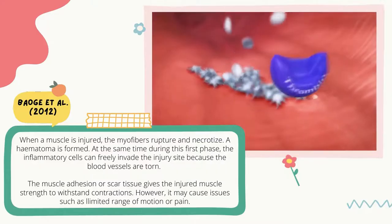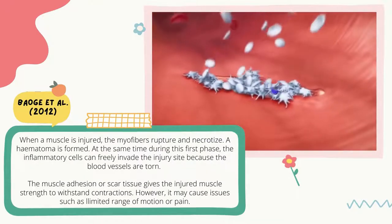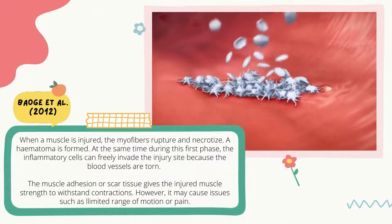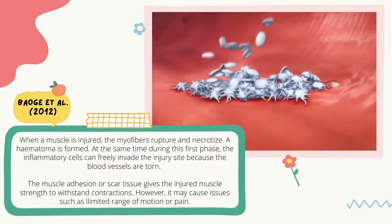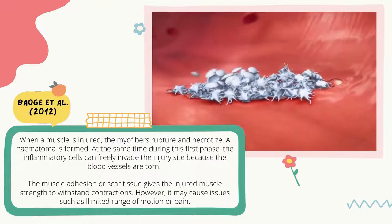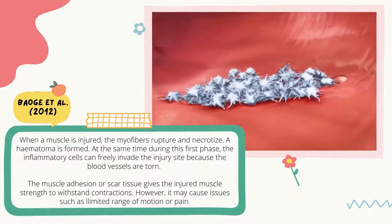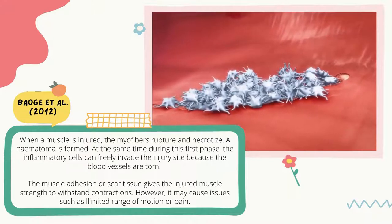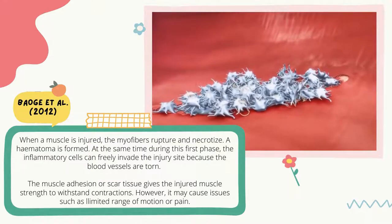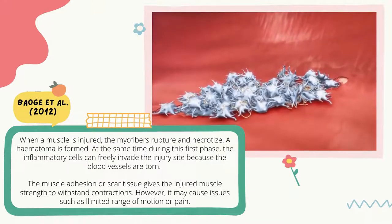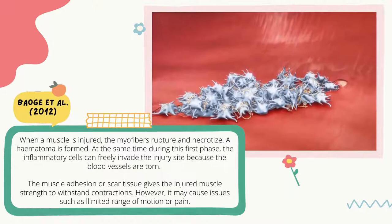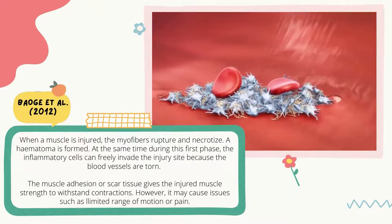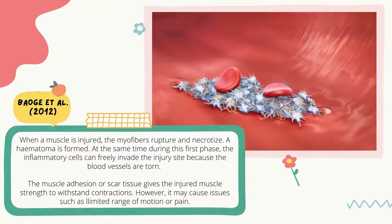When a muscle is injured, the myofibers rupture and necrotize, causing formation of a hematoma. During this first phase, the inflammatory cells can freely invade the injury site because the blood vessels are torn. The muscle adhesion or scar tissue formed gives the injured muscles strength to withstand contraction.